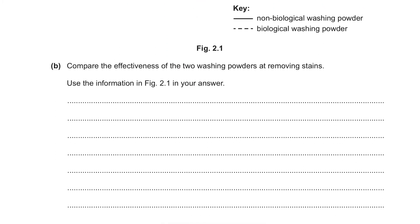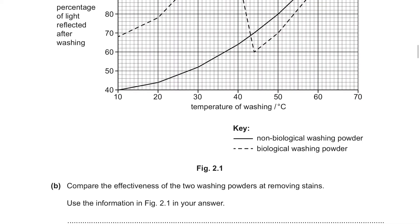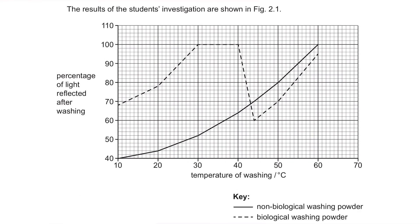Part B: Compare the effectiveness of the two washing powders at removing stains using the information in figure 2.1. Comparing graphs takes practice. First, state which one is more effective: the biological washing powder is more effective because it reached 100% faster at lower temperatures. State figures from the graph — for example, biological washing powder removes all stains between 30°C and 40°C, but for non-biological, it removes stains at 60°C.